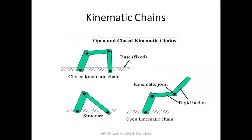A kinematic chain is a combination of kinematic pairs, and the combination of kinematic pairs forms a combination of mechanisms — that is the kinematic chain. The kinematic chain is classified into two types: one is open kinematic chain and another one is closed kinematic chain.